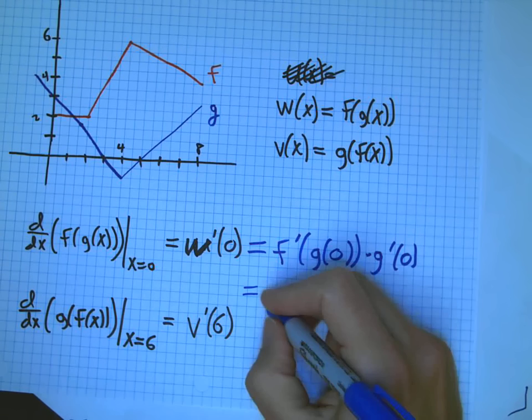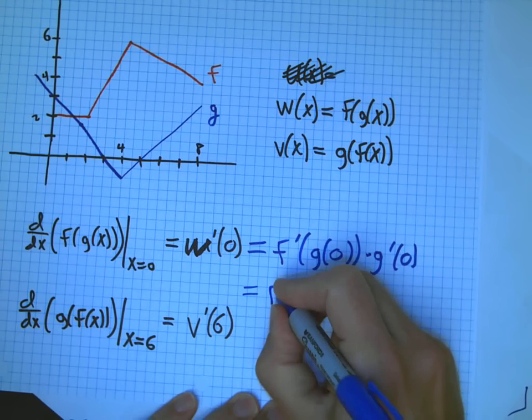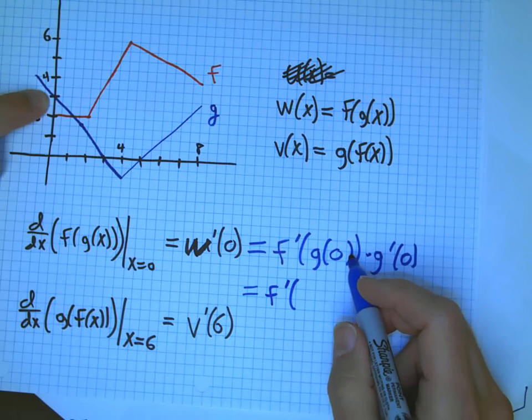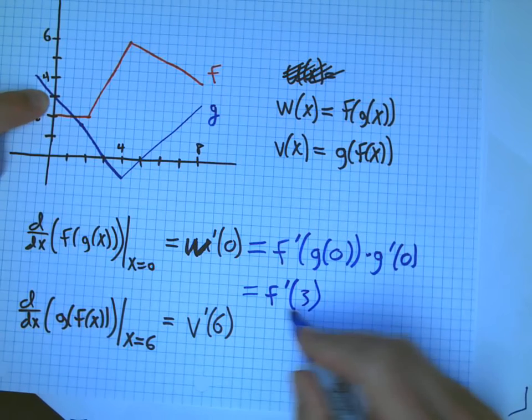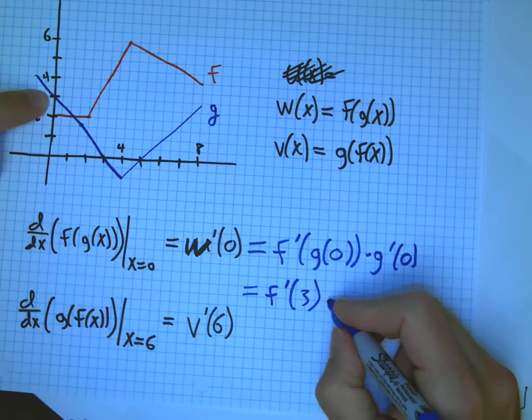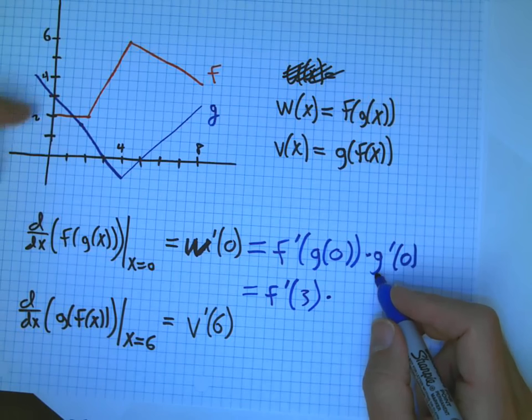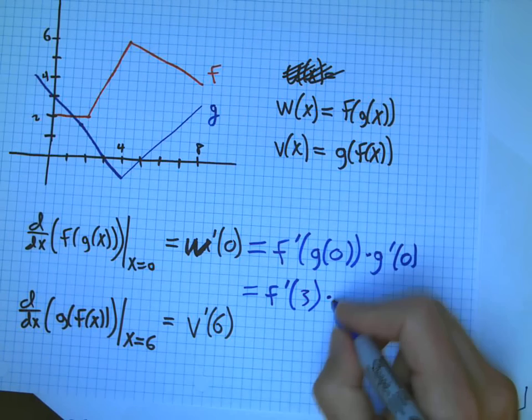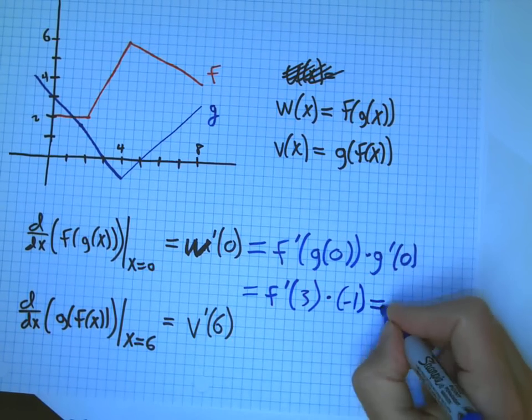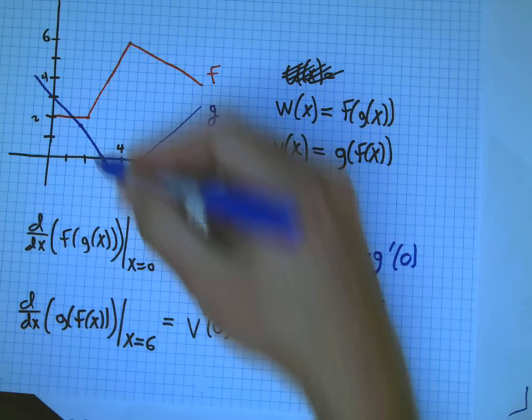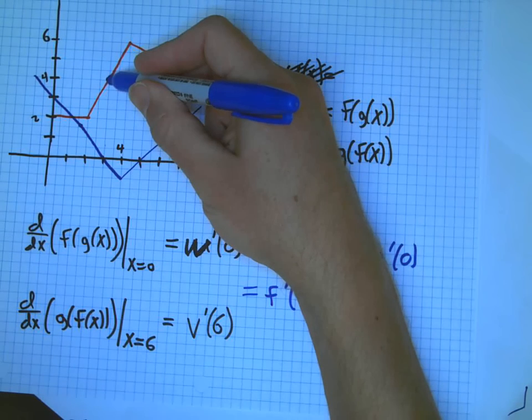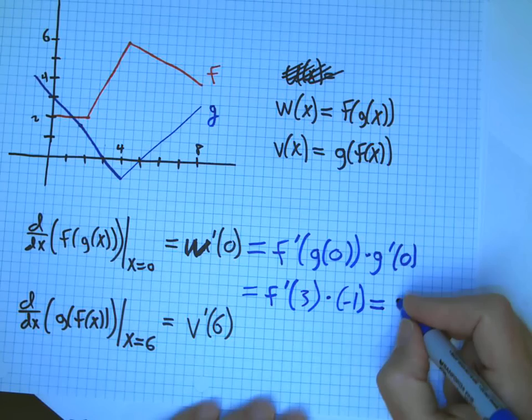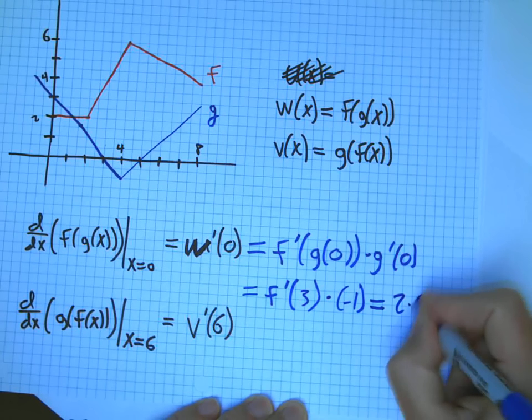So, let's just do two of those three steps. g(0) is 3. So, I'm going to end up evaluating f' at 3, not at 0. And then g'(0), that's a line. It's going from 3 down to 3. It's this line of slope minus 1. Now, f'(3), that's this guy. The slope there, in one unit over, it's going two units up. So, that's a 2. So, 2 times minus 1 is minus 2.